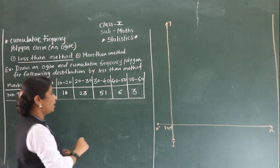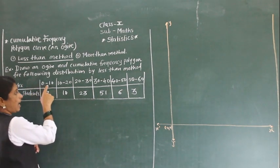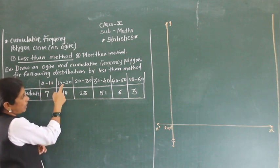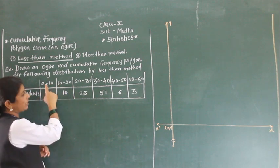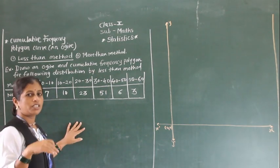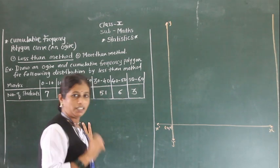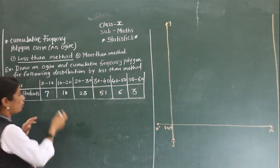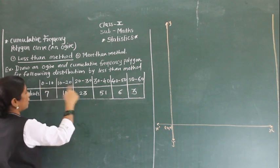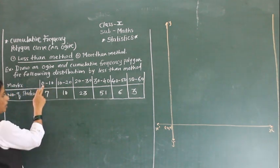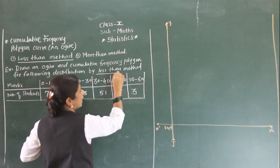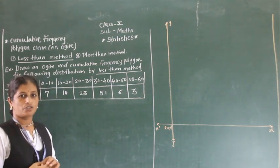First, check if the class intervals are continuous. Here the class is continuous: 0 to 10, 10 to 20 — each class connects to the next. If the class is not continuous, we would first need to make it continuous. But here, the class intervals are already continuous, so we don't need to do that.